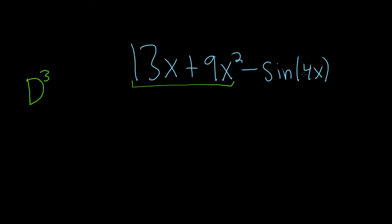In order to annihilate sine of a number times x, so if you have sine beta x or cosine beta x and you want to annihilate one of these, you just use d squared plus beta squared.